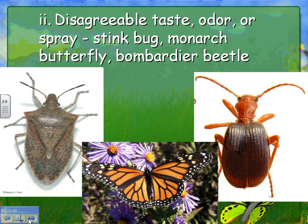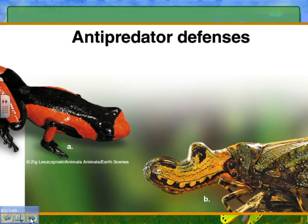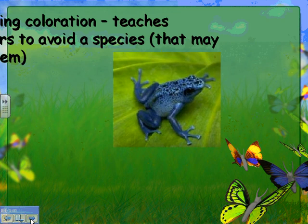Other defenses involve disagreeable taste, odor, or spray. The stink bug smells bad, the monarch butterfly tastes bad and uses bright coloring to warn predators not to eat it. The bombardier beetle injects an explosive mixture of chemicals and enzymes into a reaction chamber in its abdomen; the mixture volatilizes instantly on contact with air, generating a puff of smoke and an audible popping sound to scare off predators.